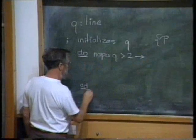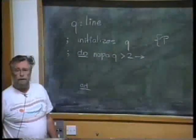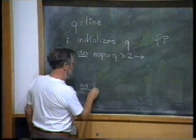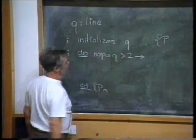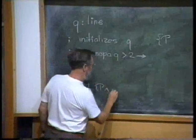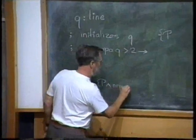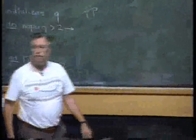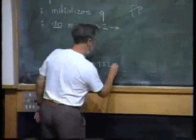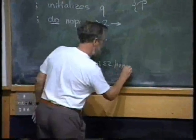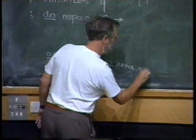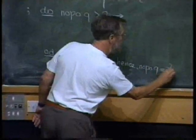Upon completion of this loop, we know p and the falsity of the guard. That is, the no po of q is at least two. Well, p says that no po of q is at least two. So, hence, the number of points on q equals two. And we are done.